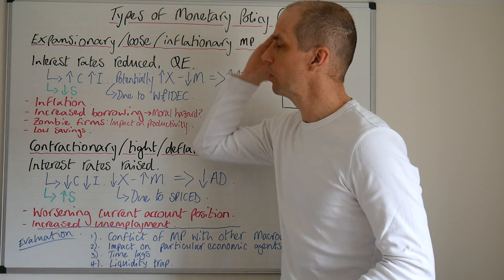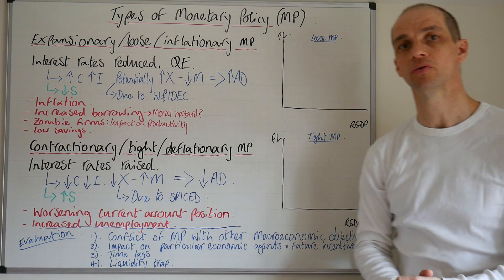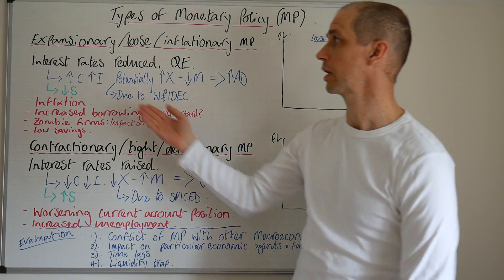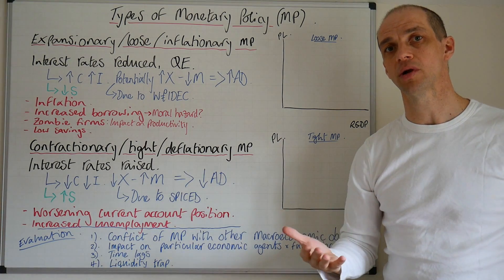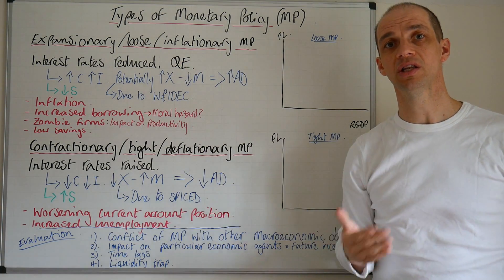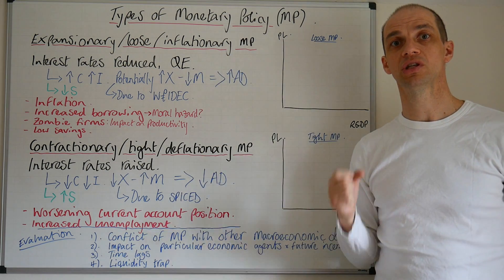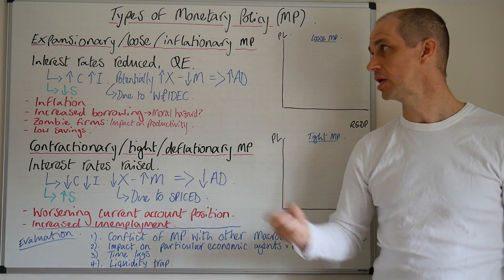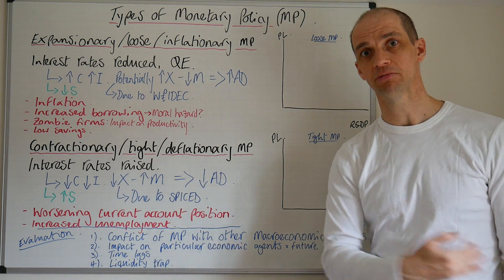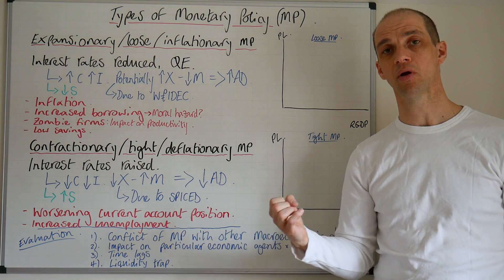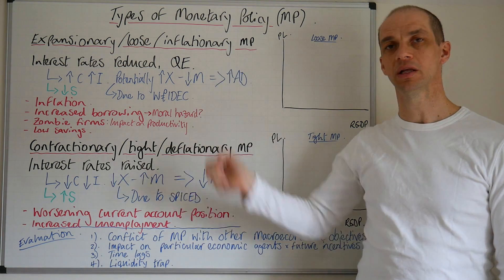Let's take a look at what an expansionary, loose or inflationary monetary policy looks like. Fundamentally it's going to involve the reduction of interest rates. It may also, in addition to that during extreme circumstances, involve the deliberate printing of currency via quantitative easing. Both of these methods help to increase the money supply — the actual amount of money in circulation at any given point in time.